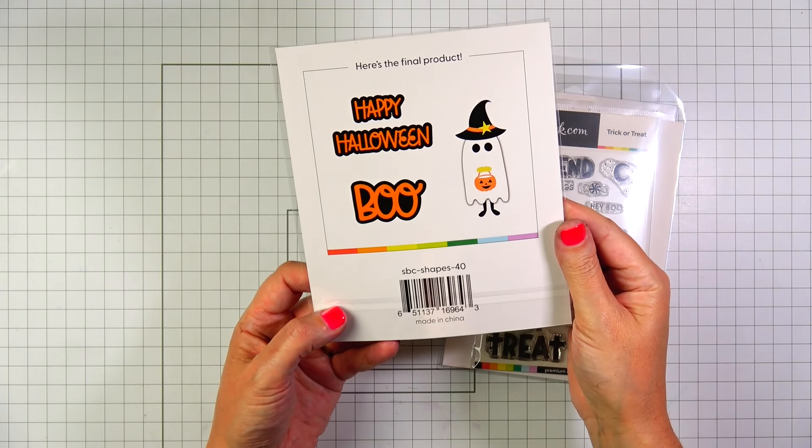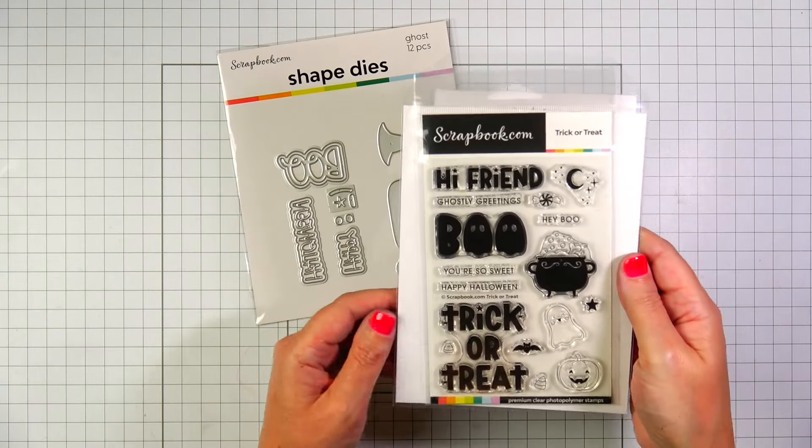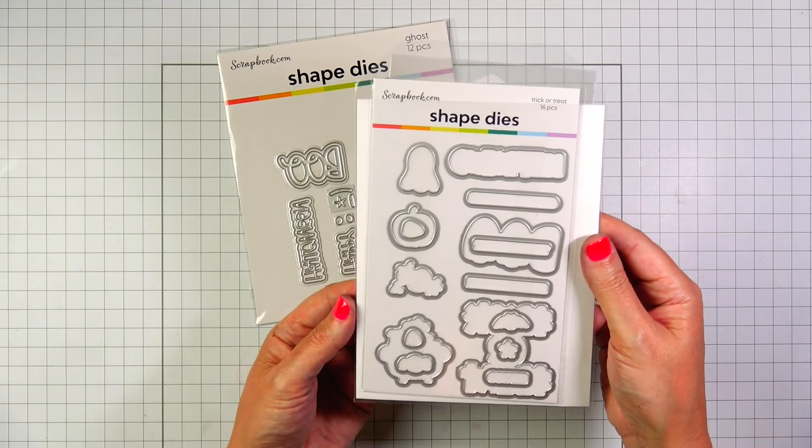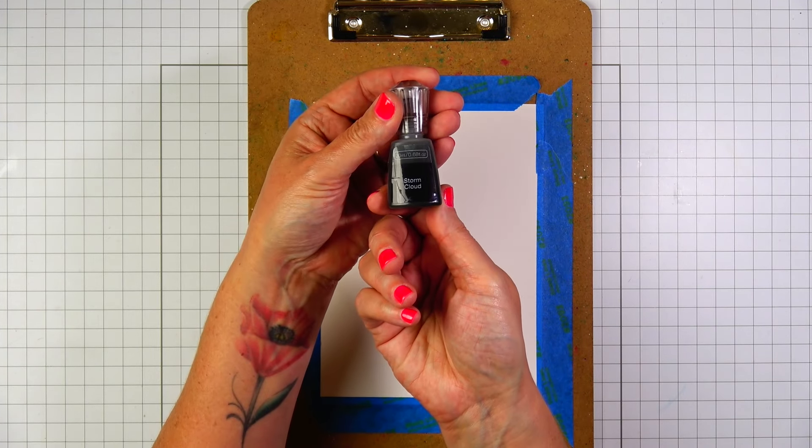The ghost comes from Ghost Die Set. This is a 12-piece die set. It has a couple sentiment words that you can use and then the sentiment that we will be using is from Trick or Treat Stamp Set.